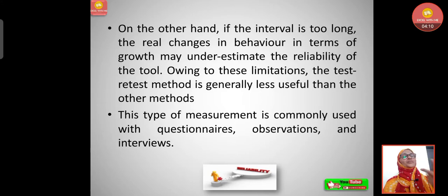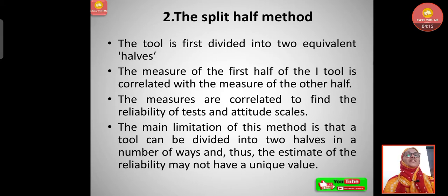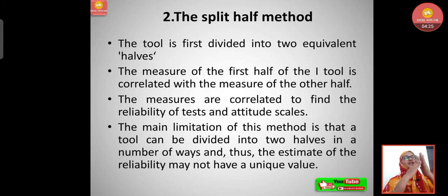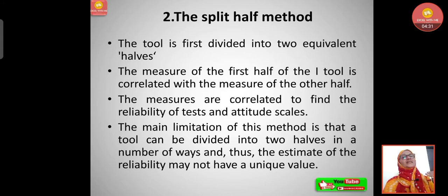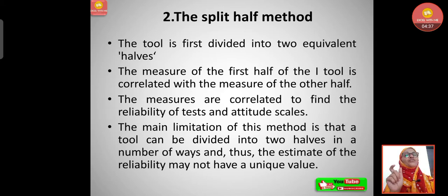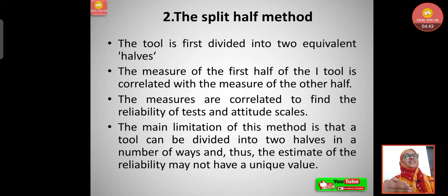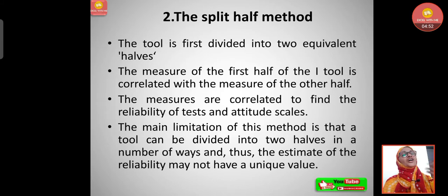The second is the split-half method. The tool is divided into two equivalent halves — for example, if there are 100 questions, they are split into two sets of 50. The measure of the first half is correlated with the measure of the other half to find the reliability of tests and attitude scales. The main limitation is that a tool can be divided into halves in many ways, so the estimate of reliability may not have a unique value.